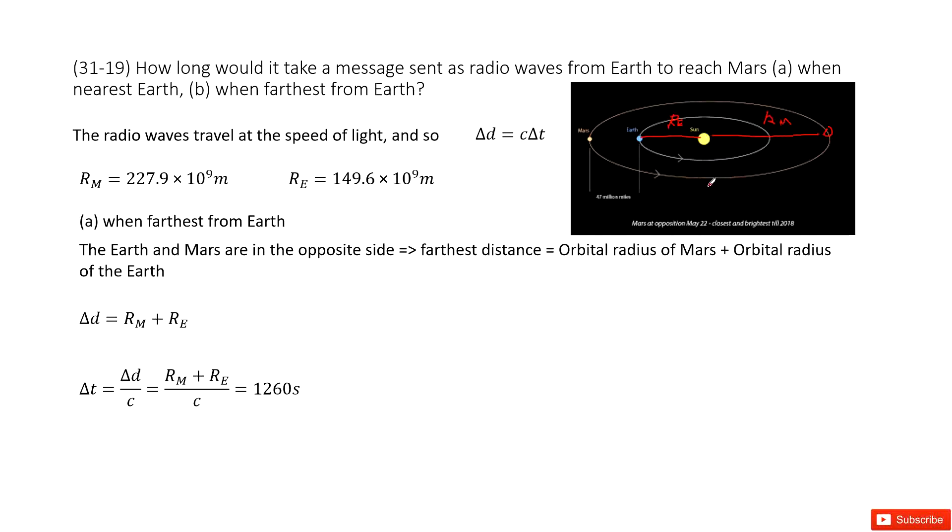So this one, the farthest distance should be orbital radius of Mars plus orbital radius of Earth. This is R_M plus R_E. So now we still use the same equation: delta t equals delta d divided by c and input the delta d inside. We get the answer there. Thank you.